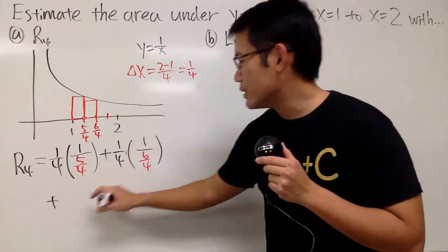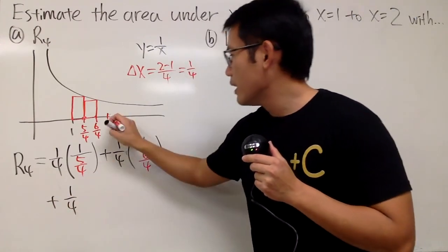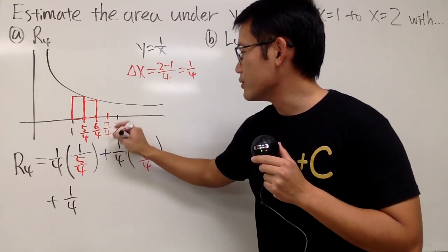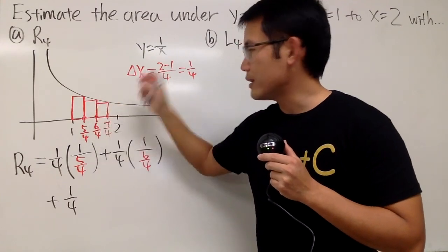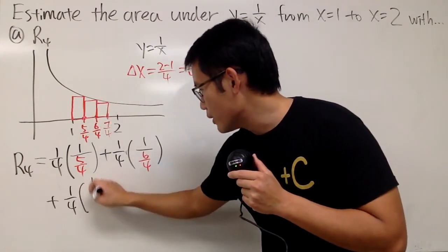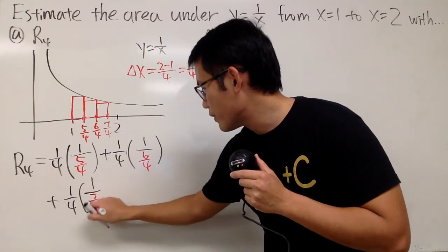Next one, of course, the width is going to be 1 over 4, and this x value is 7 over 4. You just add a quarter to this, go up like this and like that, and then you have a rectangle. All right, so you just pretty much do it: 1 over 7 over 4.